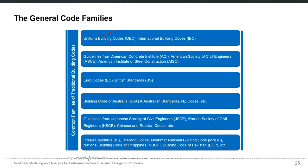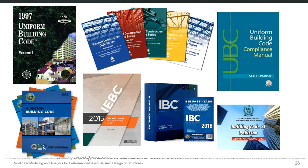We have different general code families — for example UBC and IBC — as well as other American family building codes from ACI, AISC, and the American Society of Civil Engineers. We also have Eurocodes or British codes, codes from Australia and New Zealand, codes from the Japanese and Korean Societies of Civil Engineers, Chinese and Russian codes, and national codes of individual countries such as Indian standards, Thailand codes, Myanmar national building codes, and others. The seismic design concepts for most of these are very similar and the philosophy behind all of these codes has remained very close to each other.